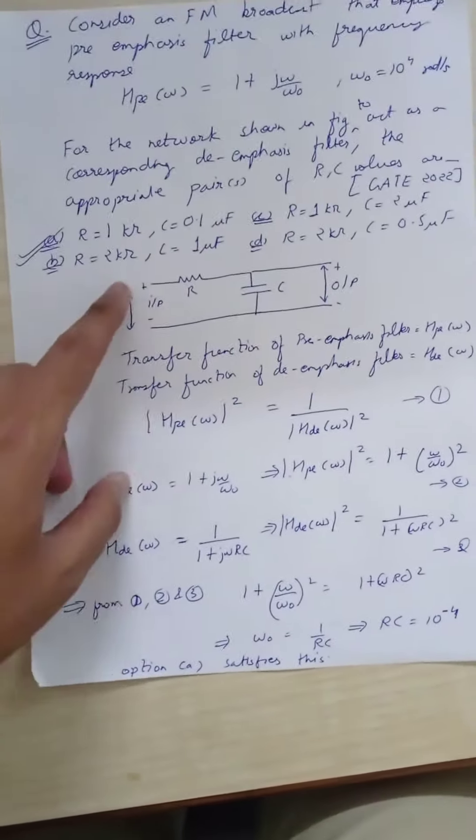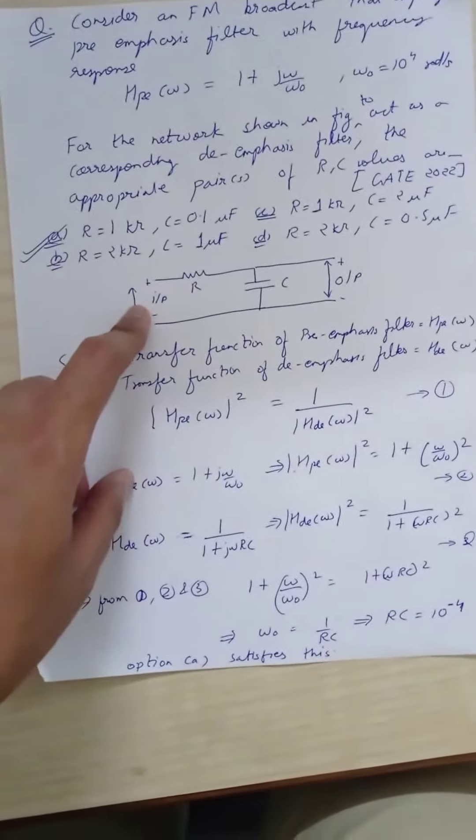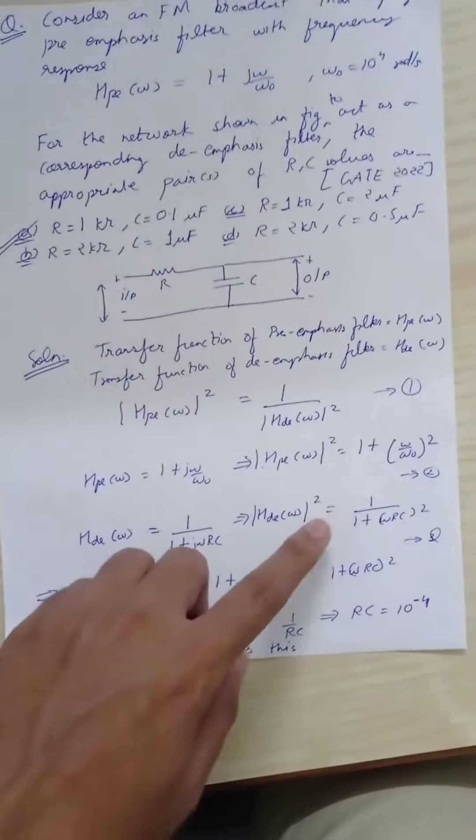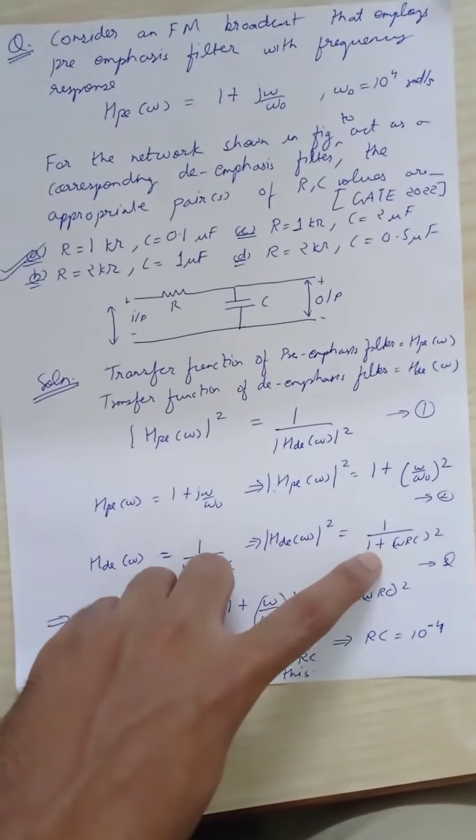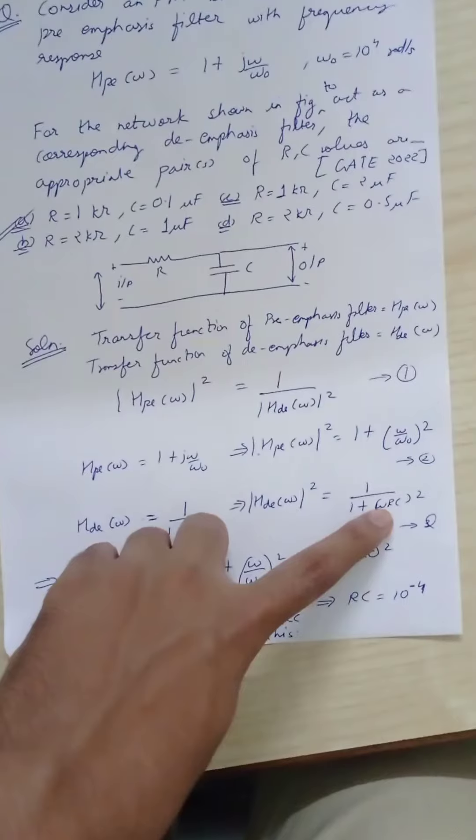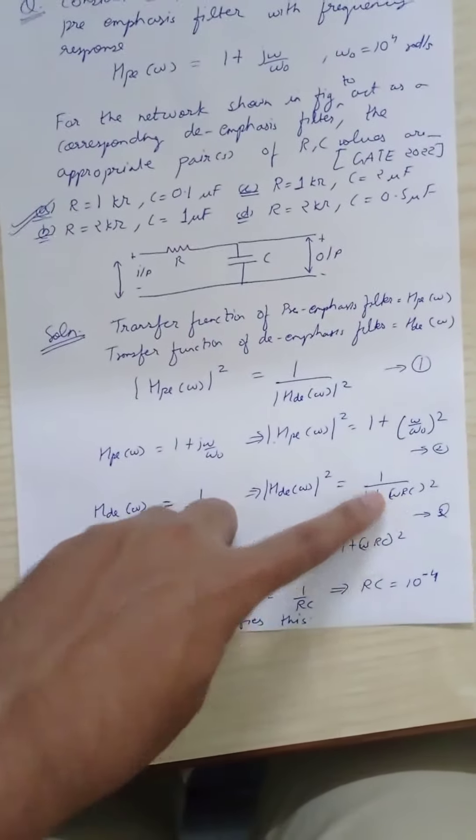The de-emphasis filter is an RC low-pass filter. Its transfer function is 1/(1 + jωRC). If we square the magnitude, it equals 1/(1 + (ωRC)²). Let this be equation 3.